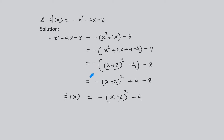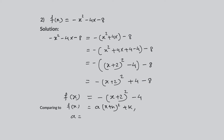Distributing the multiplication with negative 1, we have negative 1 times x plus 2 squared, minus negative 1 times 4, minus 8. By simplifying the function, we have f of x equals negative x plus 2 squared minus 4. Comparing this to the vertex form f of x equals a times x plus h squared plus k, we have a equals negative 1, h equals negative 2, and k equals negative 4.